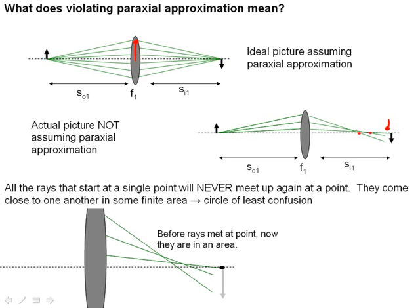And there are a couple other things about this that need to be mentioned. We've assumed that an image is where all the rays that start at a point meet again at some point. But as you violate the paraxial approximation in the real lens, the rays that start at a single point are never going to meet again at a single point, as shown in the image here. In fact, they come close together in some finite area, which is known as the circle of least confusion, which is right here.